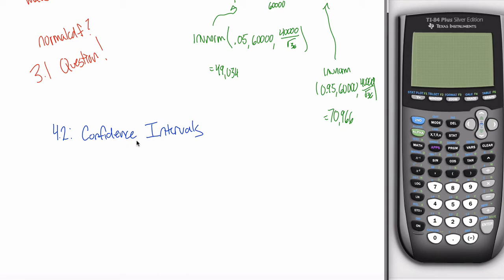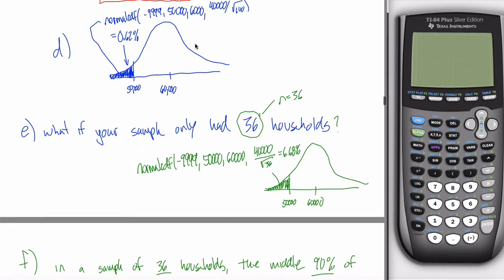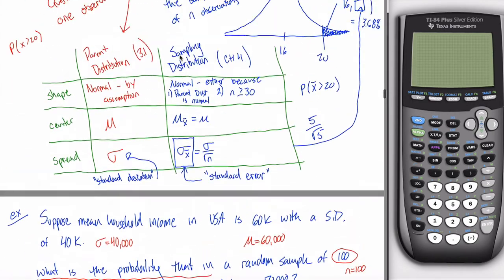At any rate, confidence intervals, 4.2. Before I get into confidence intervals, 4.2, I want to talk about stuff from 4.1. You're like, oh, I thought we were done with 4.1. Well, yes, but in 4.1...